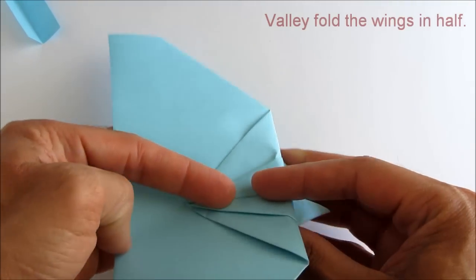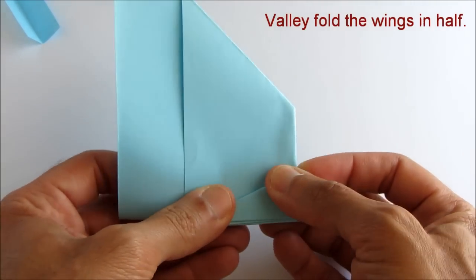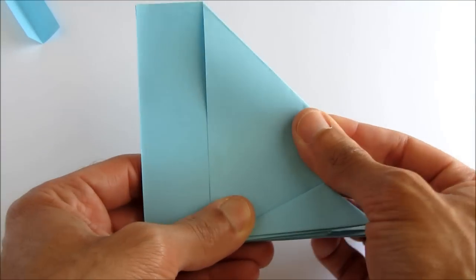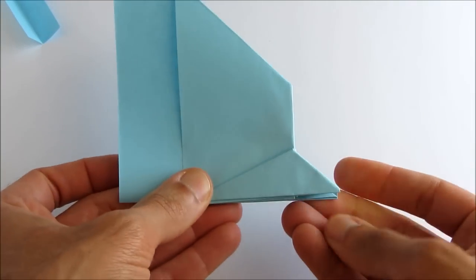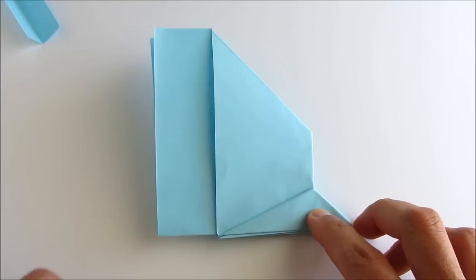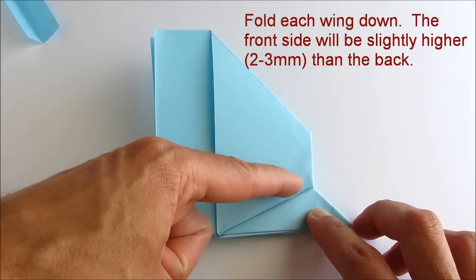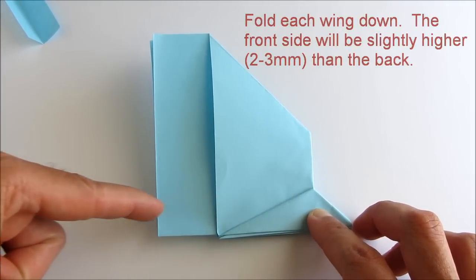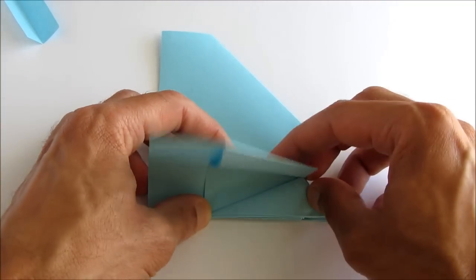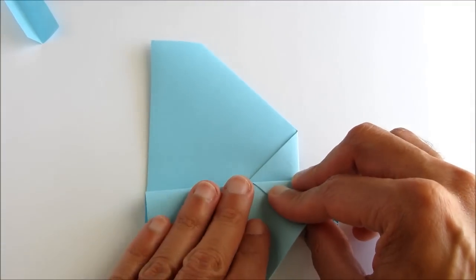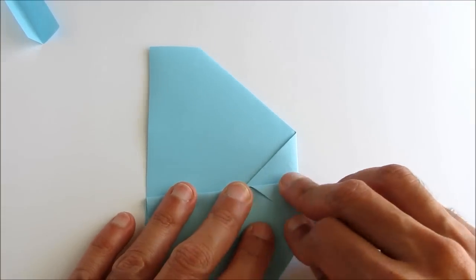So you want to fold the wing section in half like this. And now you're going to fold down each wing. And what you need to do is make sure the front of the wing is a little bit higher than the back. So there's kind of a little angle here. And it helps with the flight of the airplane. So make sure you do this.